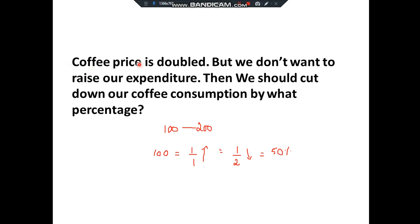Coffee prices doubled, but we don't want to raise our expenditure — by what percentage should we cut down coffee consumption? Take initial price as 100%; doubled means 200%, so an increase of 100%. 100% as a fraction is 1/1, increase. Keep numerator 1; add 1+1=2. So 1/2 decrease = 50%. We must reduce consumption by 50%.